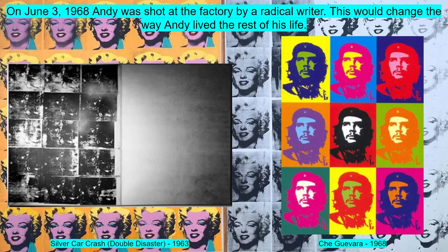She had even been in one of Warhol's films a year before. This event would change the way Andy lived the rest of his life. He had damaged eight different organs, leaving him with scars and needing to wear a corset for the rest of his life. It also made him much more guarded and less experimental and collaborative. Also notable is the artwork Silver Car Crash Double Disaster, which at auction sold for 105 million dollars in 2013.